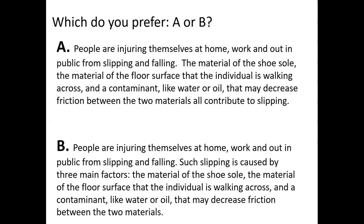Now B. People are injuring themselves at home, work, and out in public from slipping and falling. Such slipping is caused by three main factors: the material of the shoe sole, the material of the floor surface that the individual is walking across, and a contaminant like water or oil that may decrease friction between the two materials. If you are like 90% or more of people, you preferred version B here.